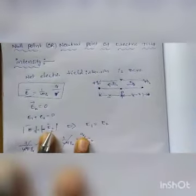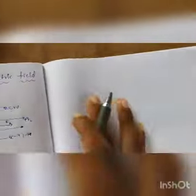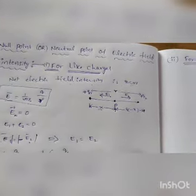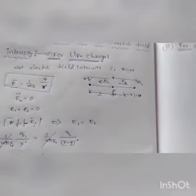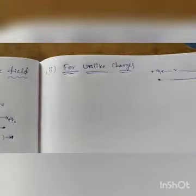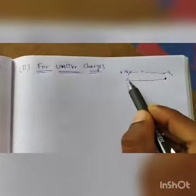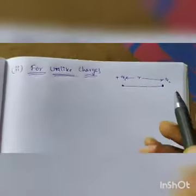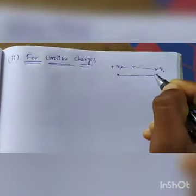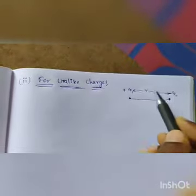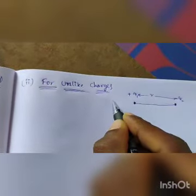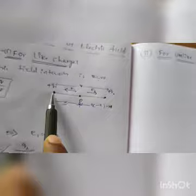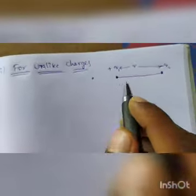For unlike charges — one positive and one negative — the situation is different. Unlike charges are attractive, so the null point is found outside the region between the two charges, not between them. I am taking the null point P at a distance x beyond q1. The distance from q2 to P is then r + x instead of r − x.